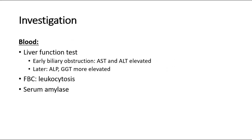Investigations include blood tests such as liver function tests. In early biliary obstruction, liver enzymes such as AST and ALT will be elevated. In later cases, ALP and GGT will be more elevated compared to AST and ALT. Full blood count may show leukocytosis, suggesting cholangitis with bacterial infection of the biliary tree. Serum amylase can be checked because gallstones in the common bile duct may cause acute pancreatitis, in which case serum amylase will be elevated.